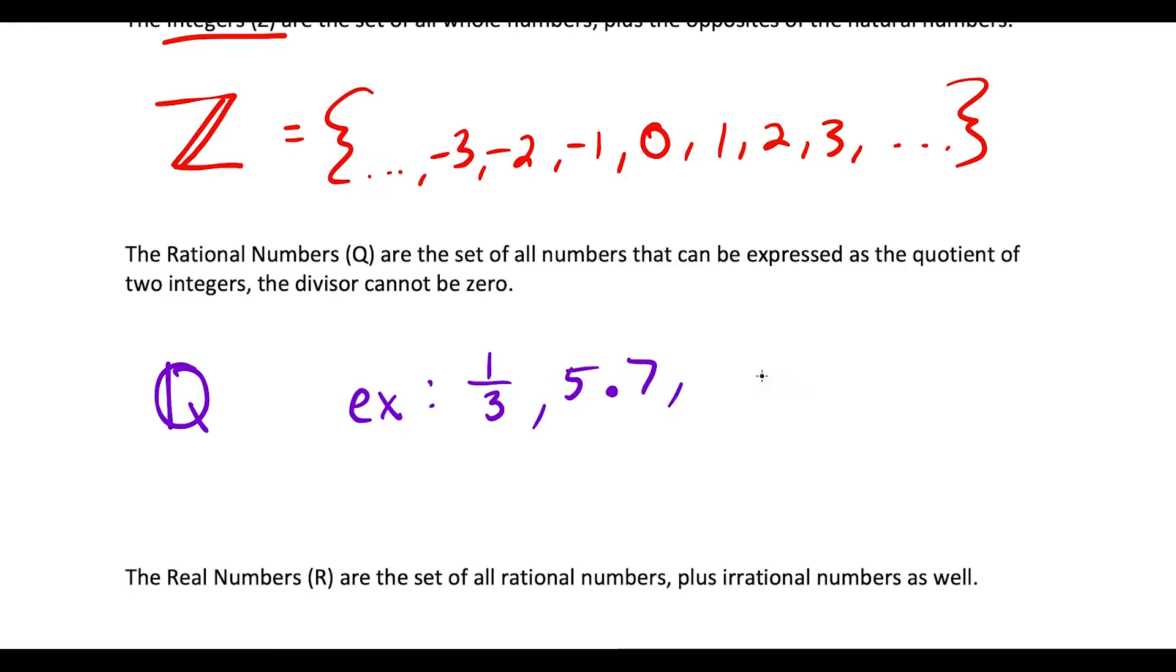We could have an infinite decimal that has a pattern to it, like repeating one three going on forever. But just know all of the integers are also considered to be rational numbers, so something like negative three, zero, twelve. The list will go on and on.